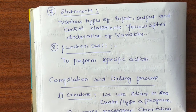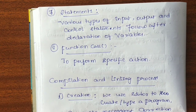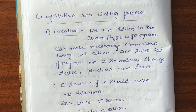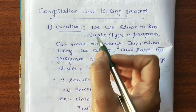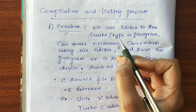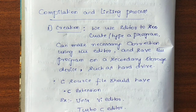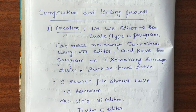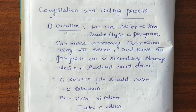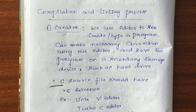Now let us see very important concepts: compilation and linking. After writing the program, the first step is creation of the program. We use an editor to create or type a program, make necessary corrections, and save the program on a secondary storage device such as a hard drive. Many editors are available, like Turbo C, the VI editor in Linux, and Code Blocks editor. After typing the program, the file should be saved with a .C extension — for example, add.C.